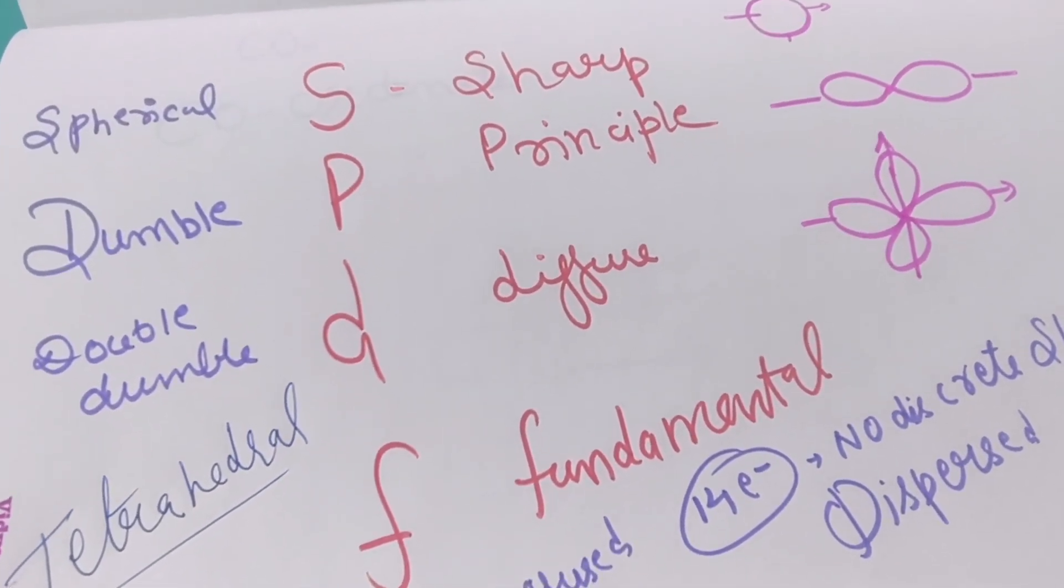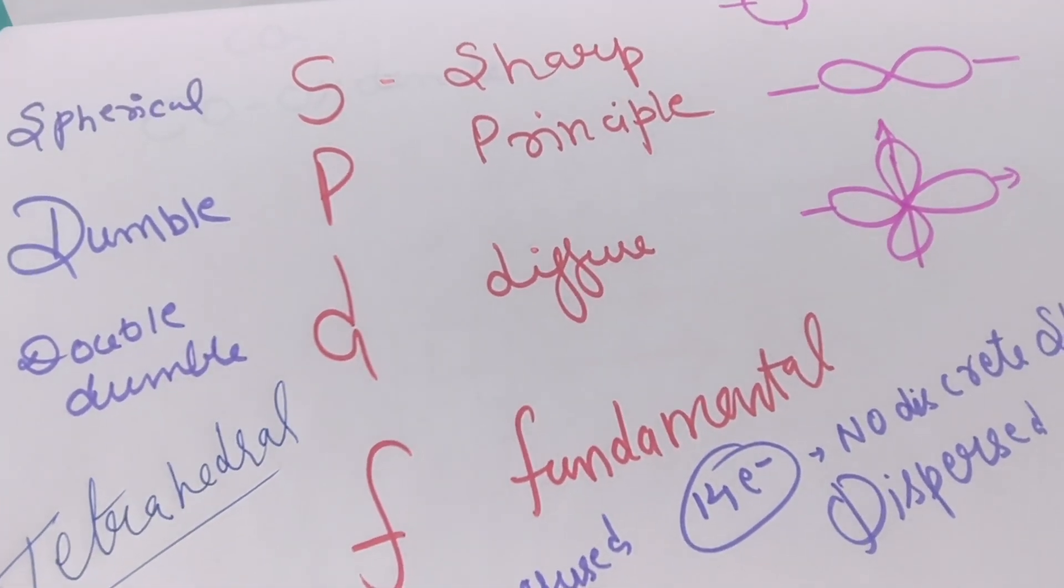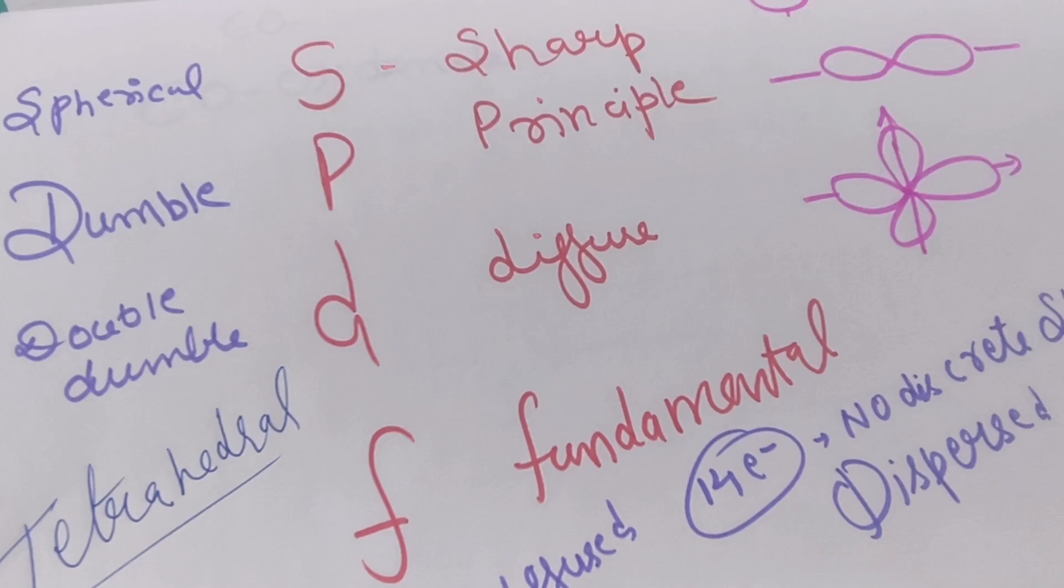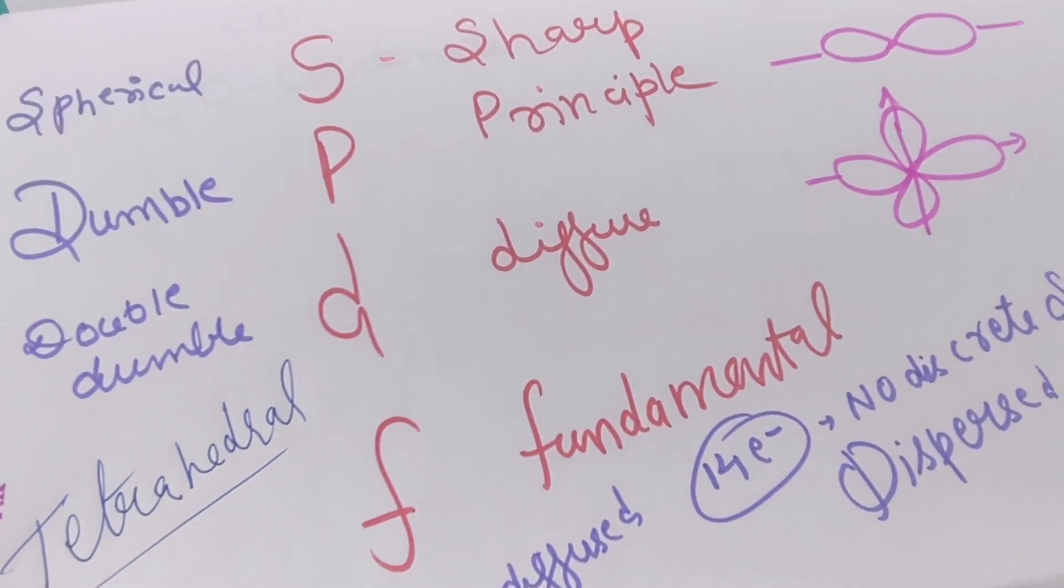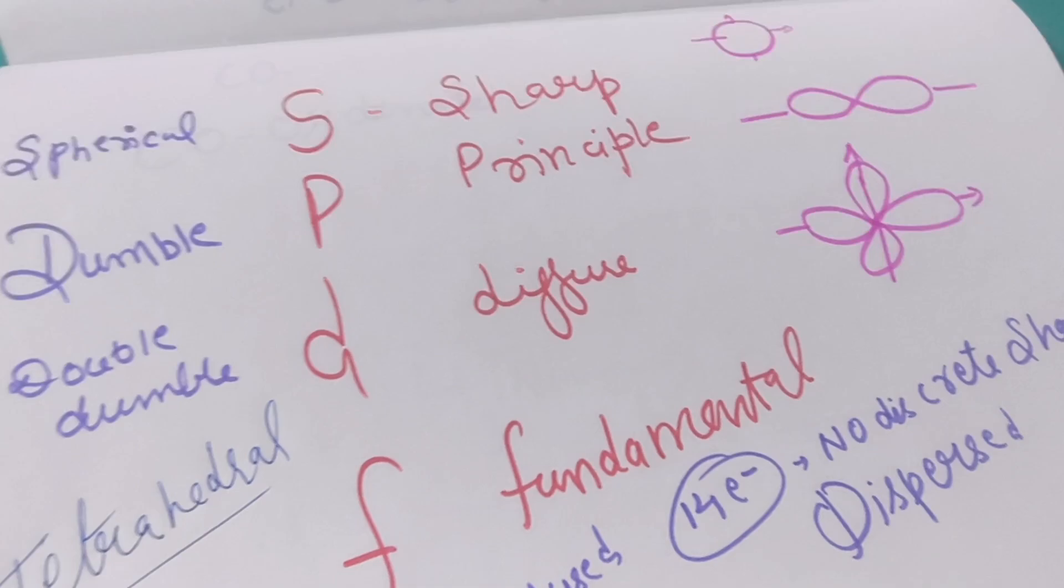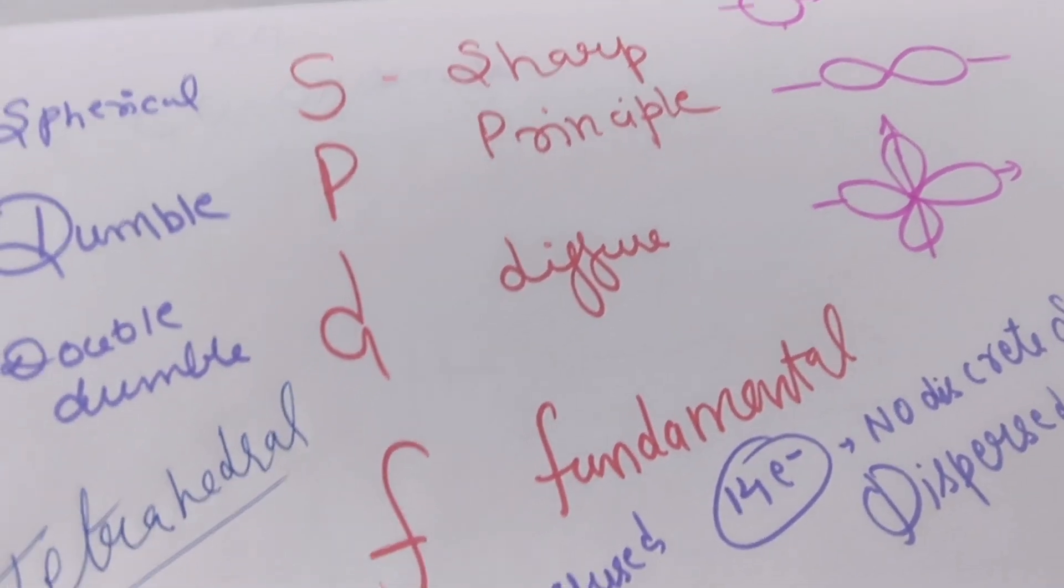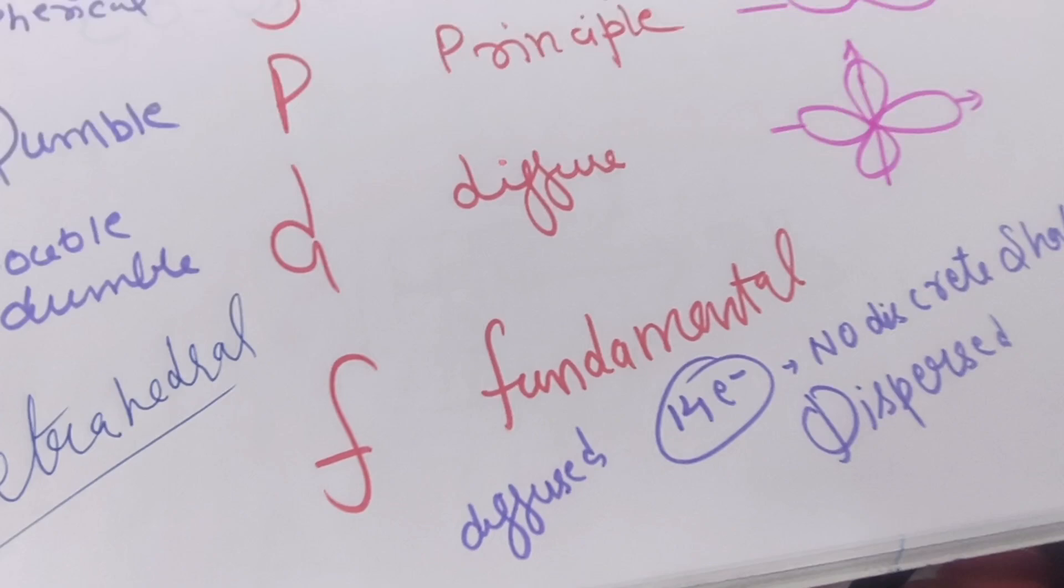You can take the look on the f orbitals. Talk about the spdf, so the letter spdf stands for sharp, principal, diffuse, and fundamental lines. These terms are taken from the spectrum, from spectroscopy. Now we are talking about the spdf orbitals. The shape of s orbital is spherical, the shape of p orbital is dumbbell, the shape of d orbital is double dumbbell.